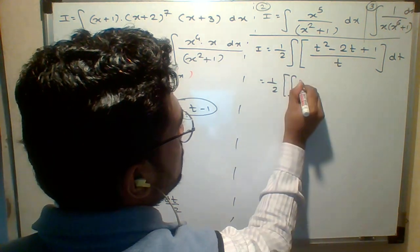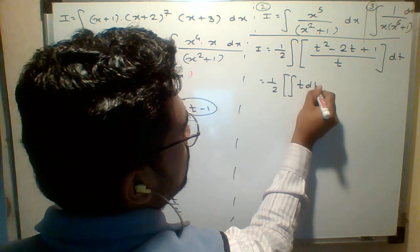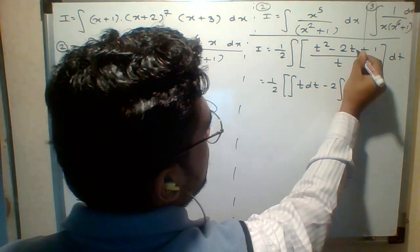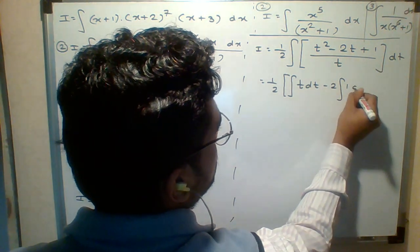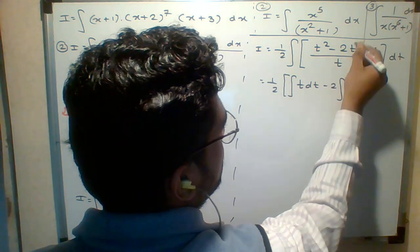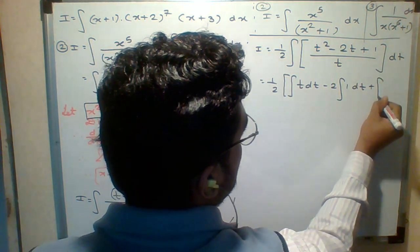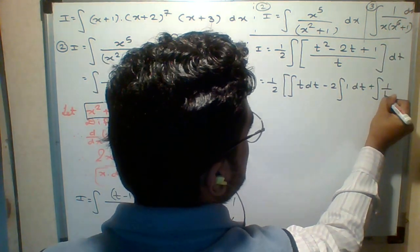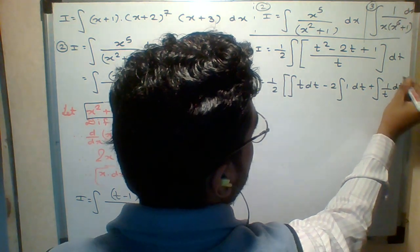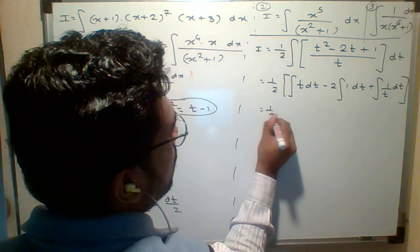1 upon 2. Integration of t squared upon t is t. Minus 2. t upon t is 1. And integration of 1 upon t.